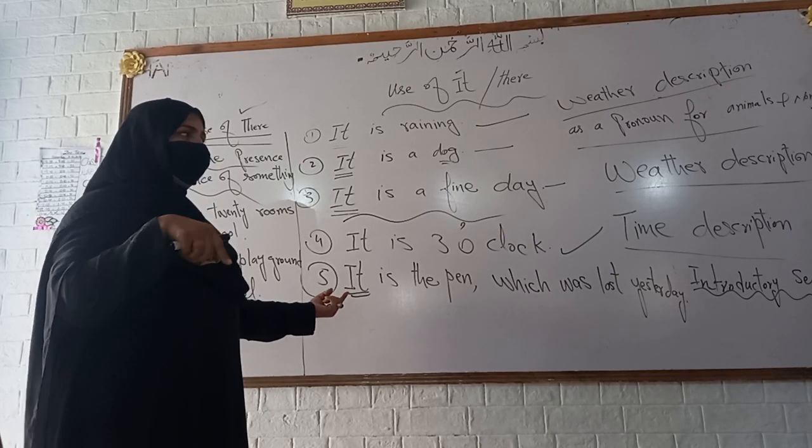Same is the case with there. There can be used to show the presence or absence of something. For example, there are 200 rupees in my purse — showing presence. And there is no money in my pocket — showing the absence of money. For presence and for absence, we use there.